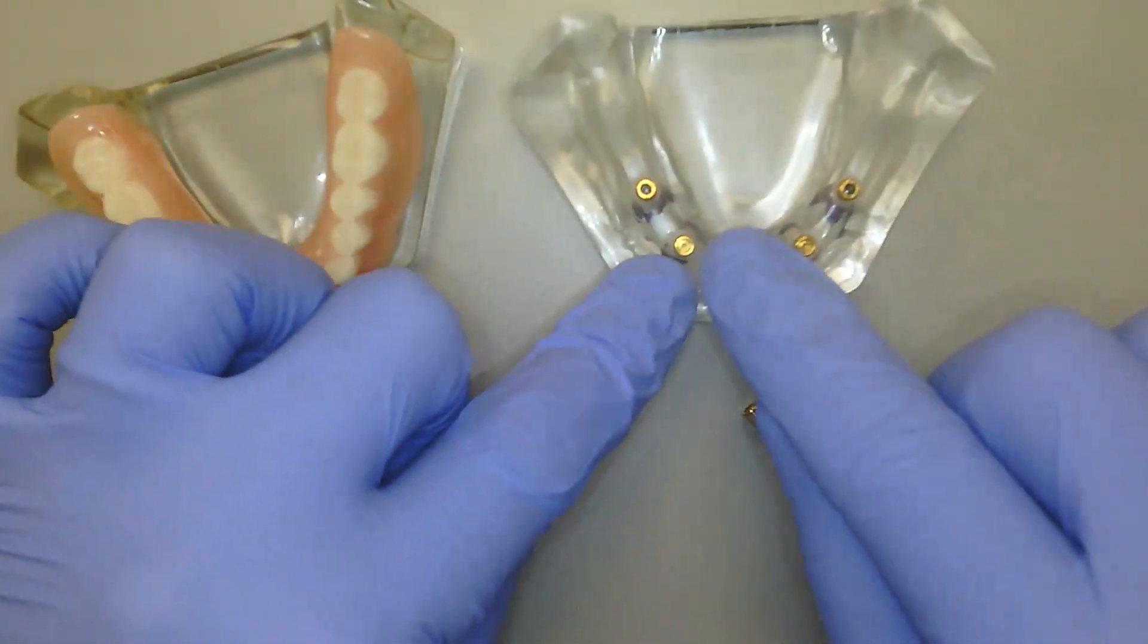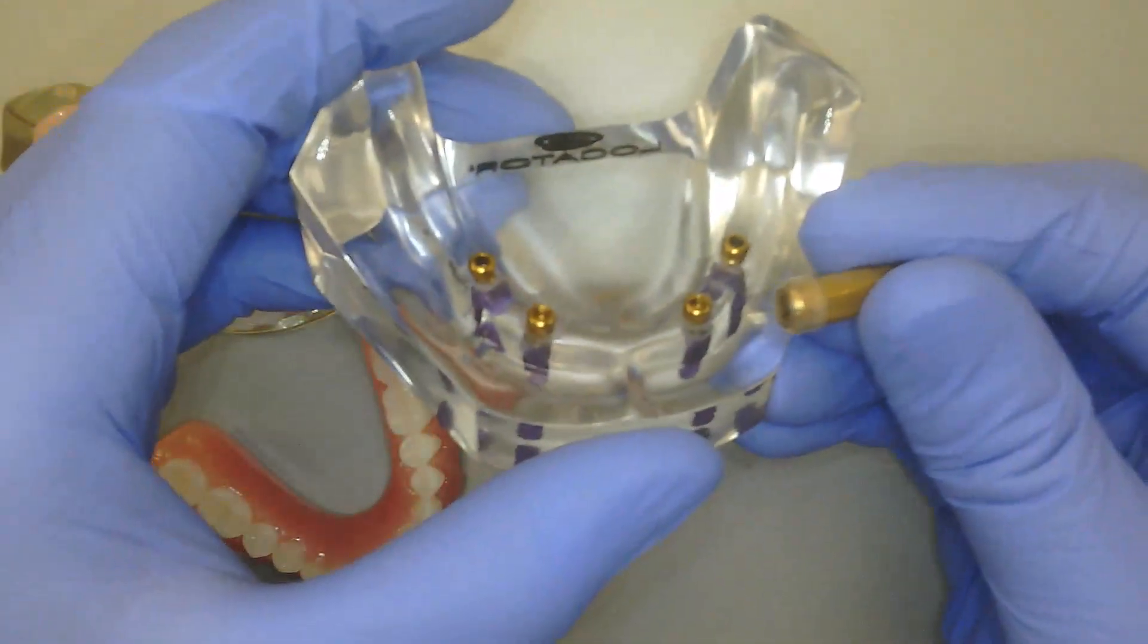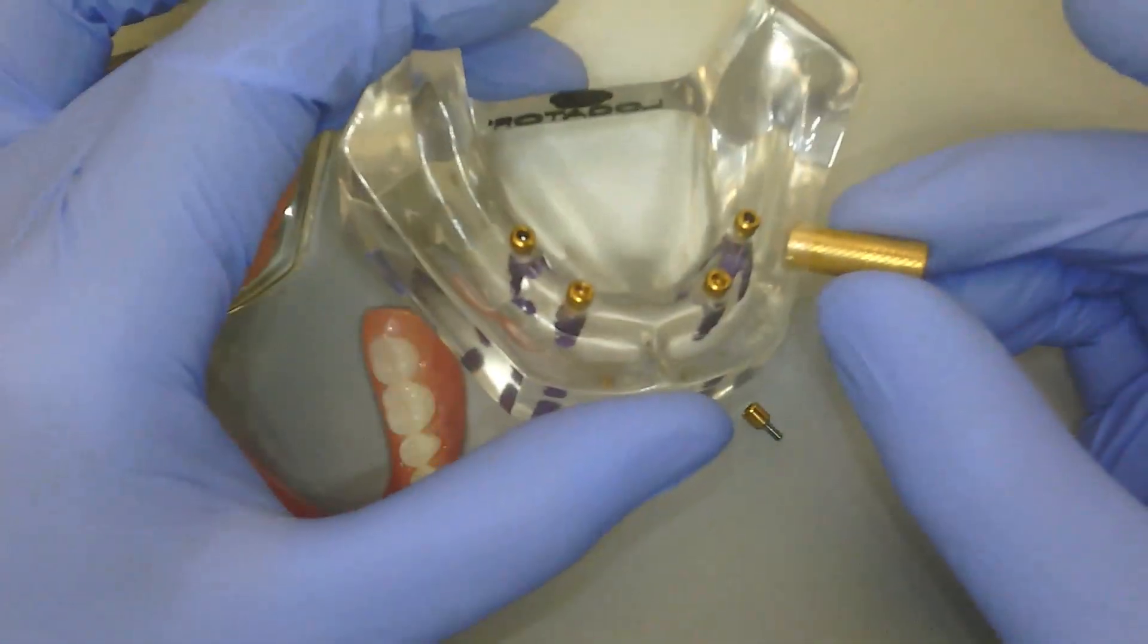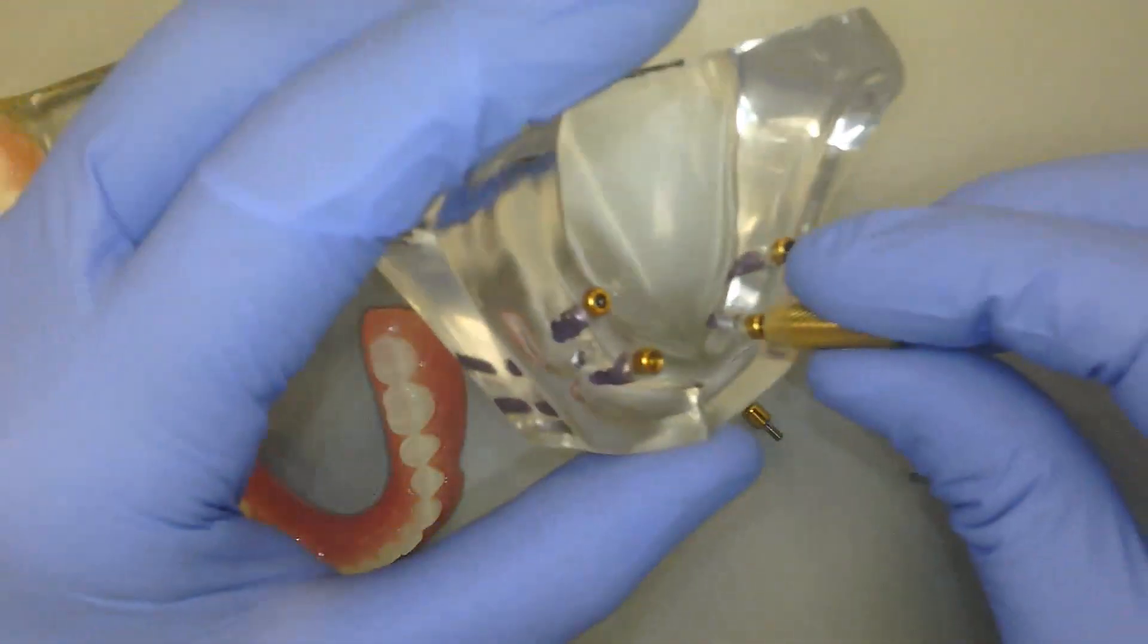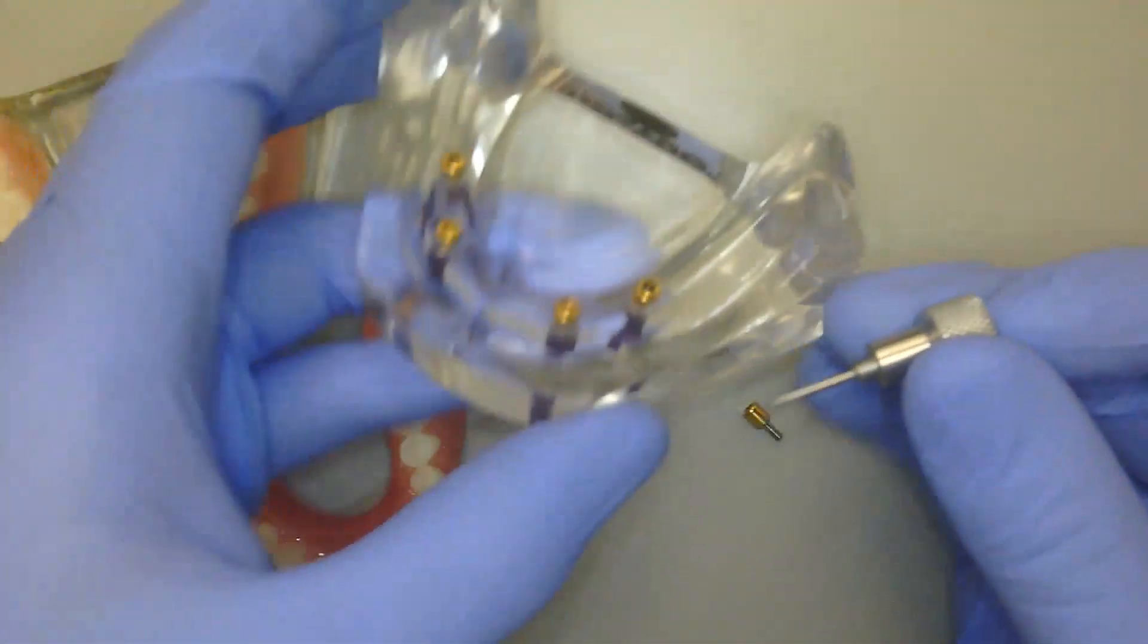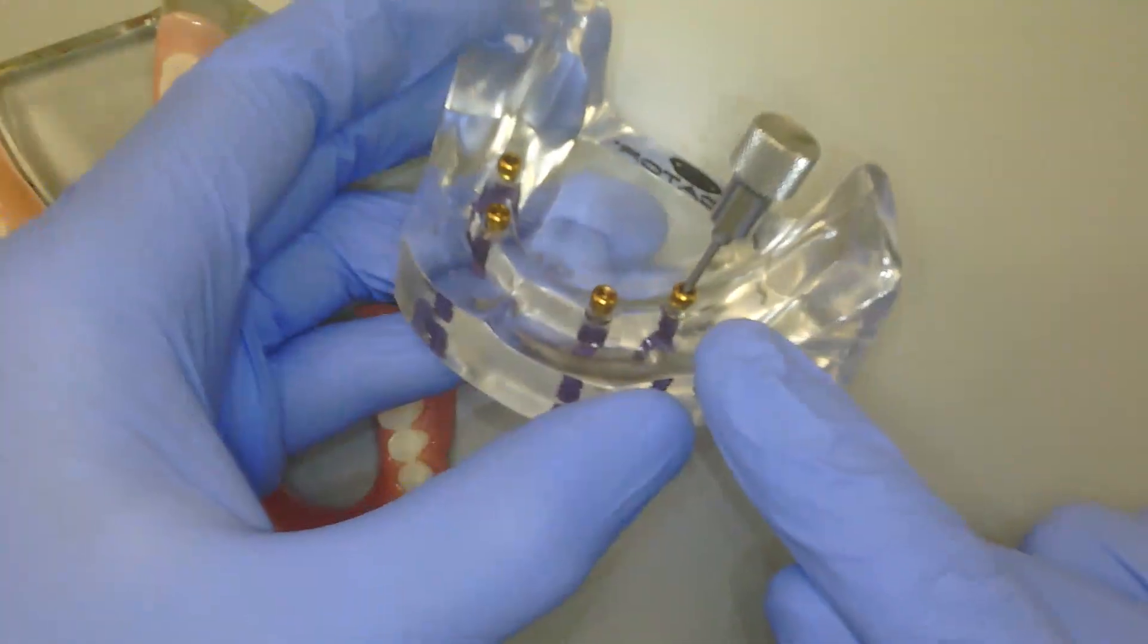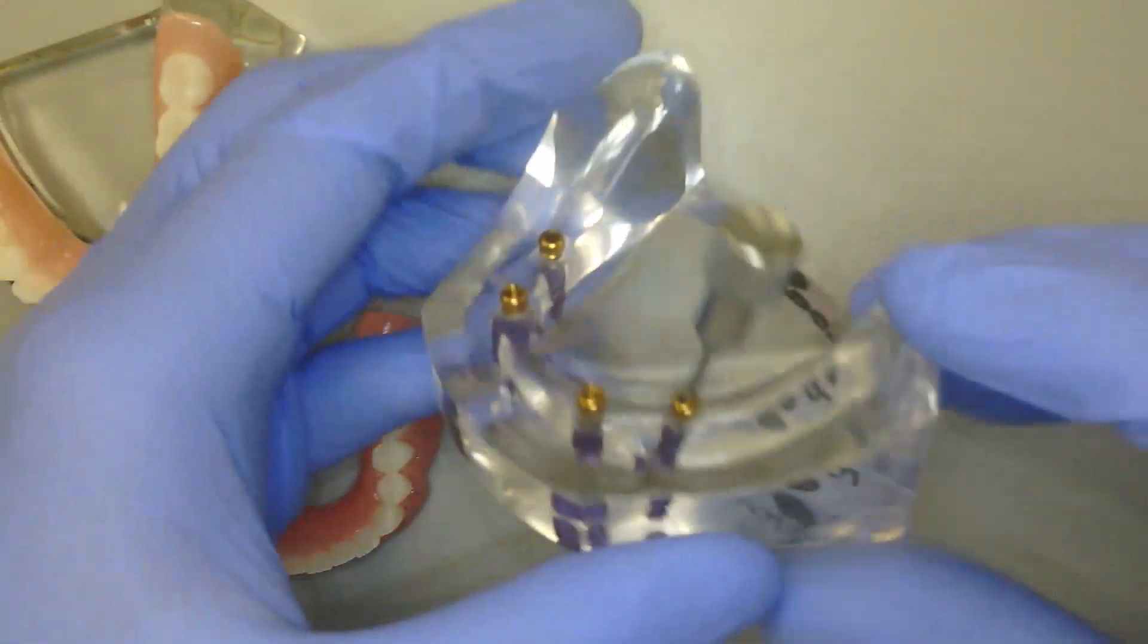Now at this point, we can place our standard locator abutments utilizing our locator core tool or our manual driver to place our locator abutments. With our locator angled, we are going to be using a hex driver to tighten those down and to place our abutments in that orientation and angle.